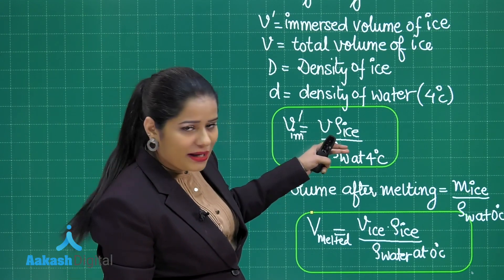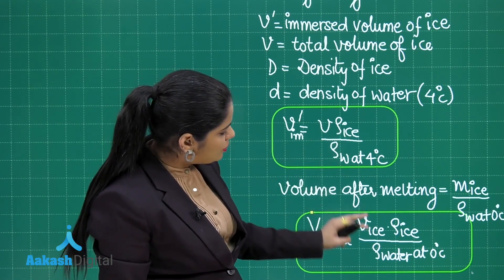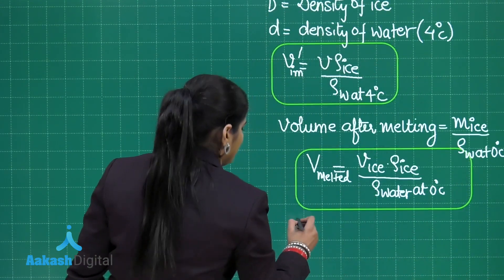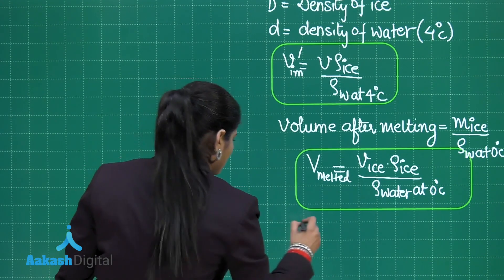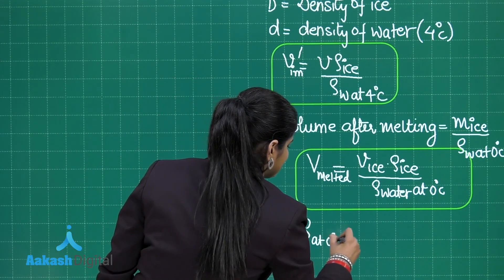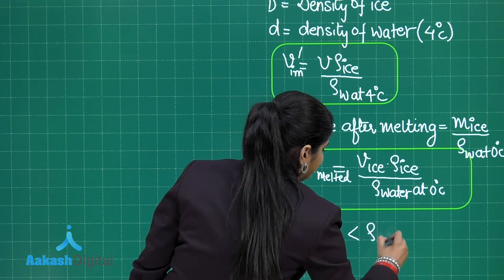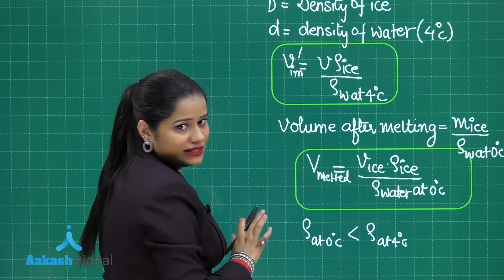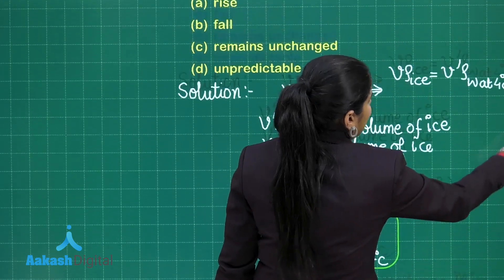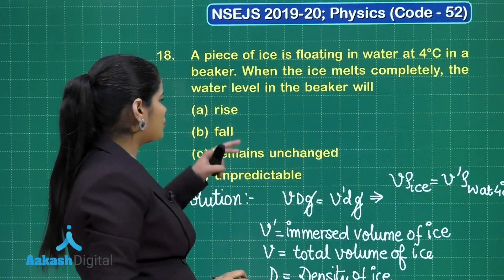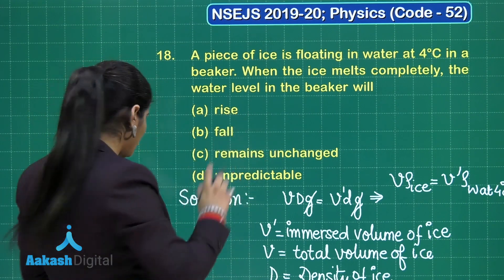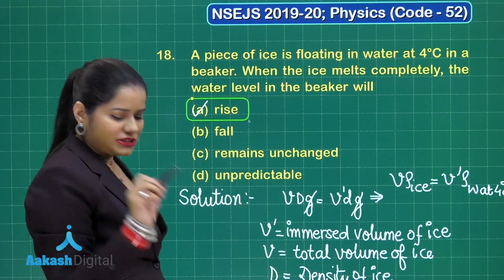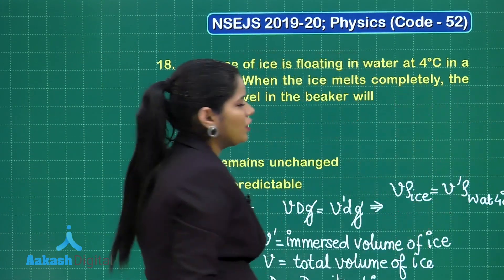The density of water is maximum at 4°C and is less at 0°C. So ρ at 0°C is less than ρ at 4°C. Since V_melted is inversely proportional to density, and density at 0°C is less, V_melted is going to be more than V_immersed. Hence the volume increases and there will be a rise in the water level. I hope that is clear. Let us move on to the next question.